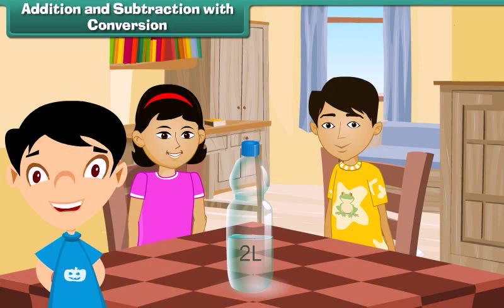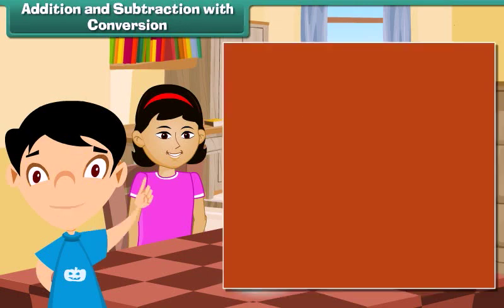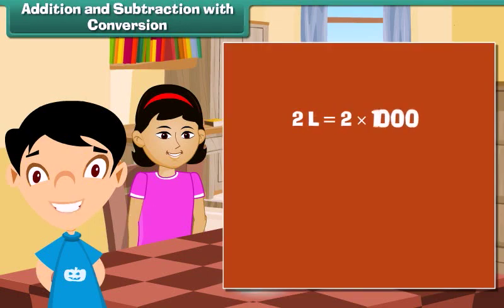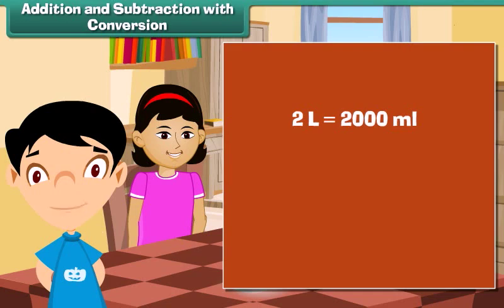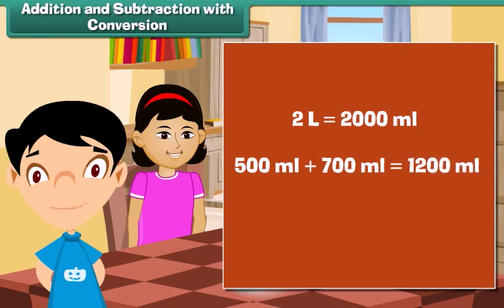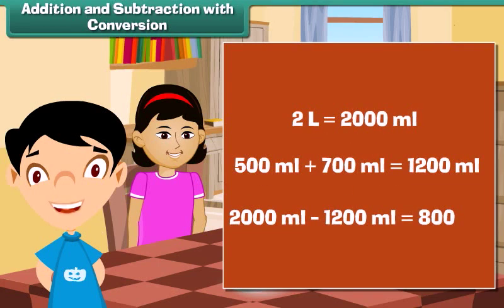Addition and subtraction with conversion: Soha's water bottle holds 2 liters of water. Soha drank 500 milliliters and her friend Govind drank 700 milliliters. Let's find out how much water is left. Total water is 2 liters, which equals 2 into 1000, which is 2000 milliliters. Total water consumed is 500 plus 700, which is 1200 milliliters. Water left equals 2000 minus 1200, which equals 800 milliliters.